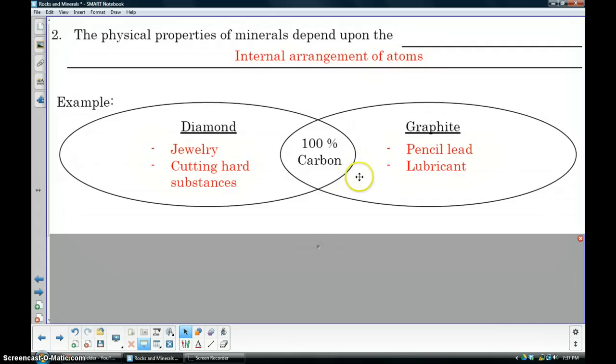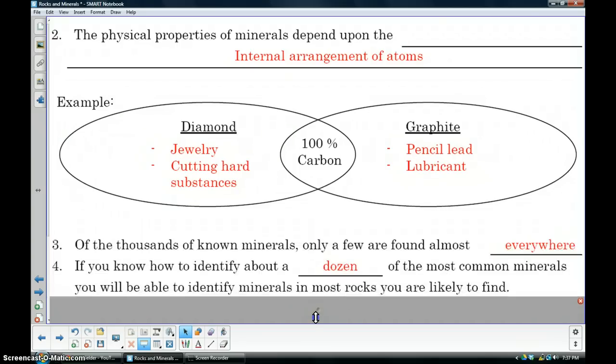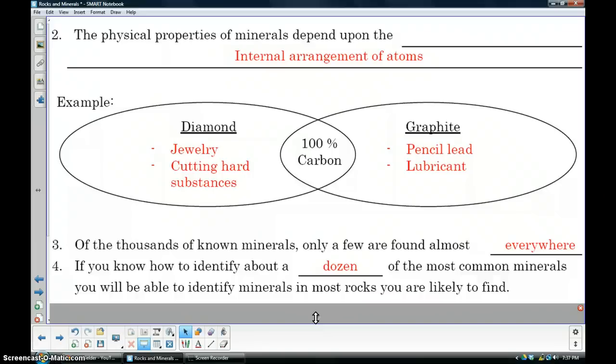When you use your pencil, those sheets are just breaking off as you're drawing along your paper. The paper is harder than the graphite, so the graphite sloughs off in sheets. Out of all the known minerals, only a few are found almost everywhere. The most common—about a dozen—are the ones we're used to using or seeing. They make up all the other rocks, and those are the ones you'll see in the lab and on the back of the reference table, on page 16 of the ESRT.